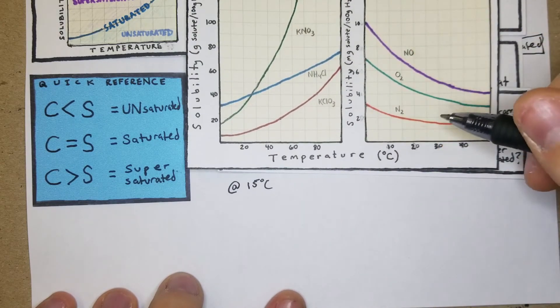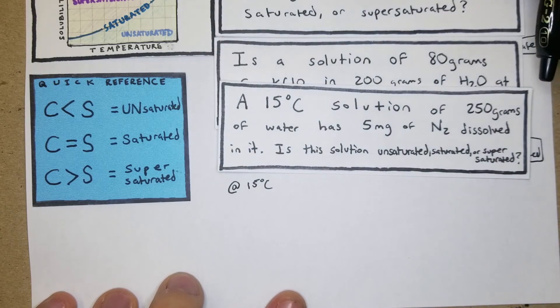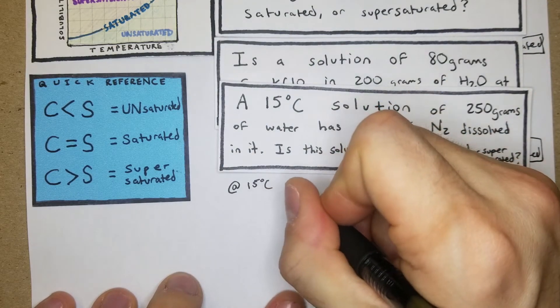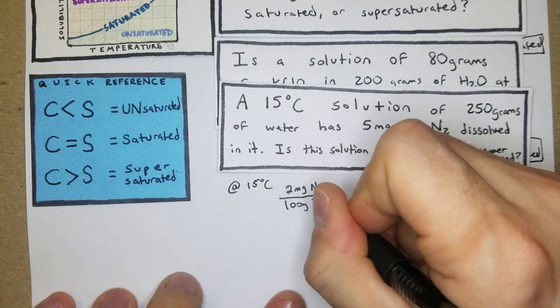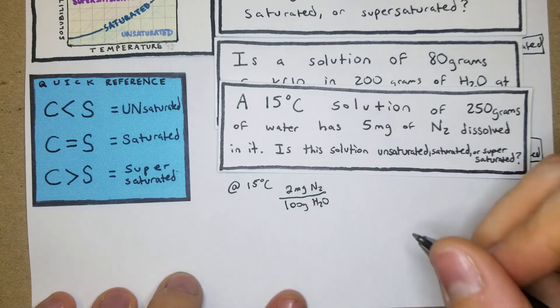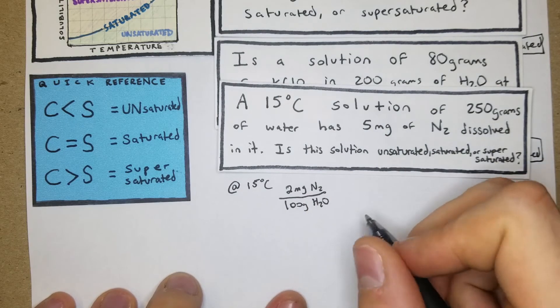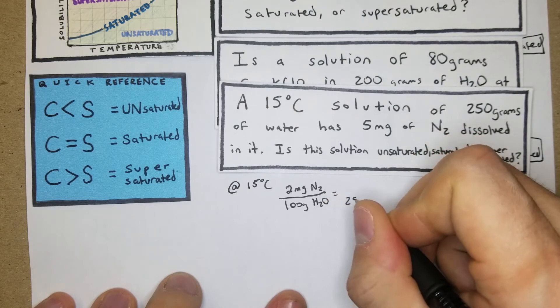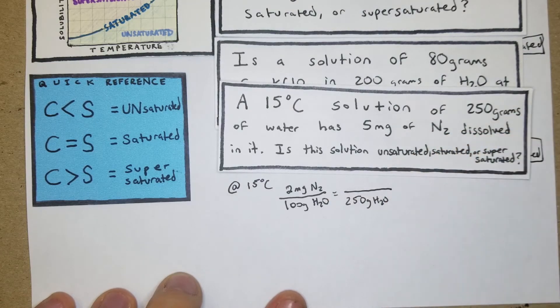2 milligrams of N2 can dissolve per 100 grams of water. We have 250 grams of water. For this one you can do it in your head, but I'll just cross multiply and divide for the sake of it.